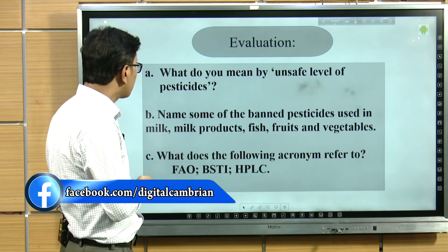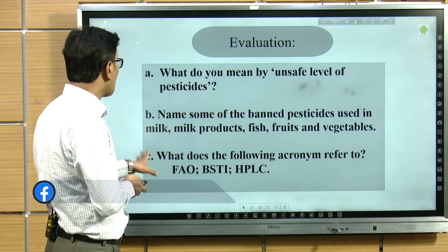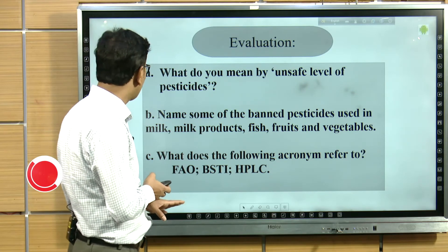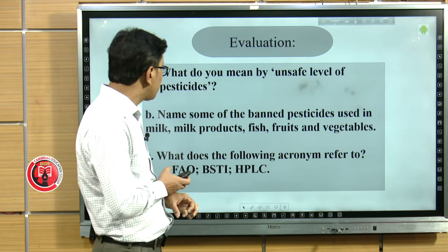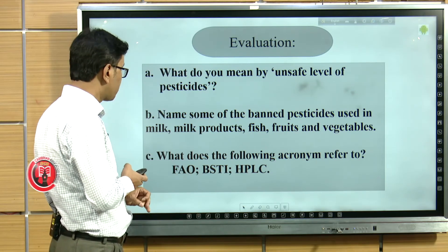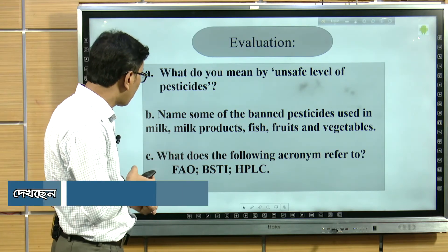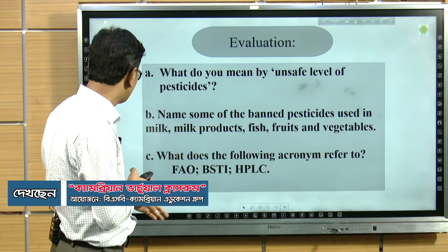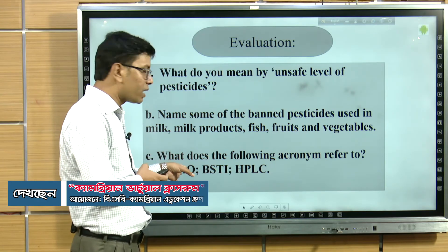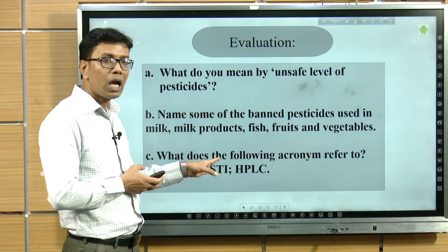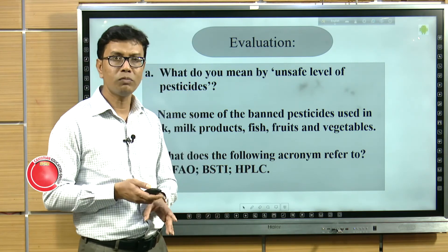After reading the text, you can evaluate yourself with these questions: What do you mean by unsafe level of pesticides? Name some of the banned pesticides used in milk, milk products, fish, fruits, and vegetables. What does the following acronym refer to — FAO, BSTI, SPLC? These acronyms have been used in the text and you should find their elaborated forms.